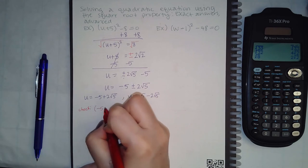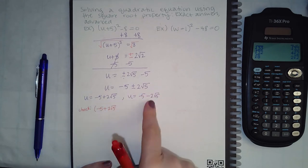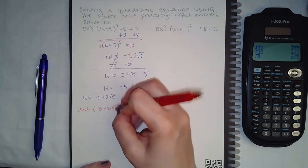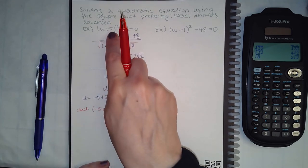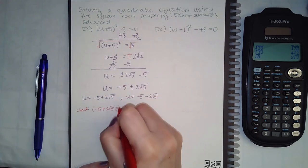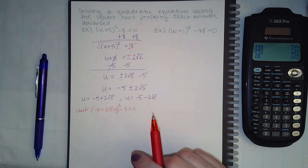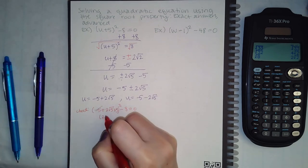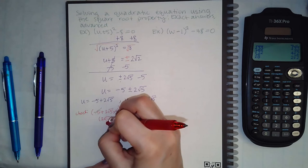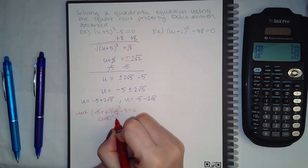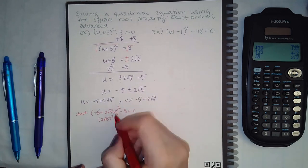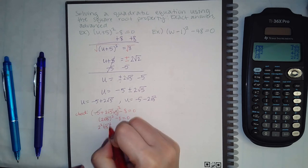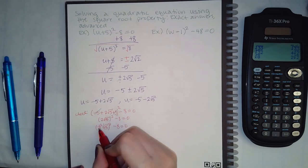Let's check the positive version. I plug in negative 5 plus 2 square root of 2 for u, and I still have the plus 5 inside the parentheses. The 5 and negative 5 cancel, leaving 2 square root of 2 squared. Applying the square to both factors gives 2 squared times square root of 2 squared, which equals 4 times 2.